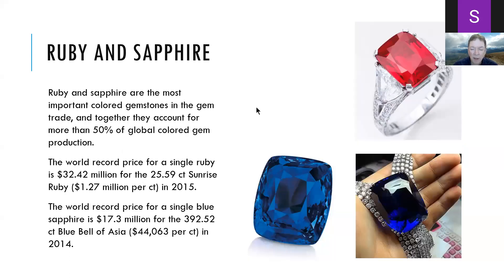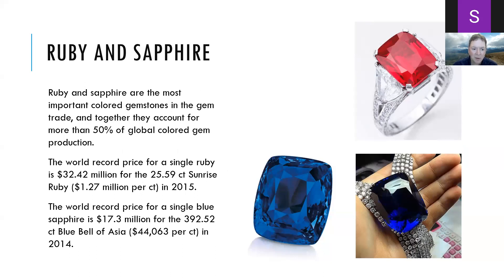Ruby and sapphire are the most important colored gemstones in the gem trade. The Sunrise Ruby set the world record price of 32.4 million dollars in 2015, and the Blue Bell Sapphire, almost 400 carats, sold for 17.3 million dollars in 2014. Today we'll be talking primarily about emerald, sapphire, and ruby.